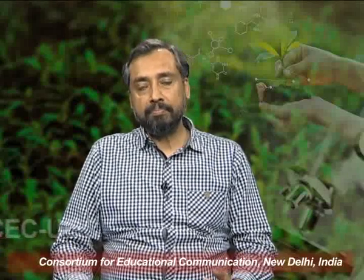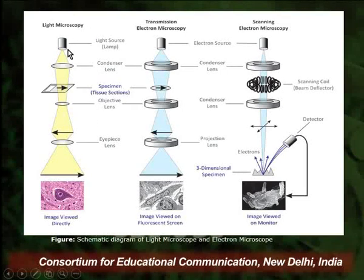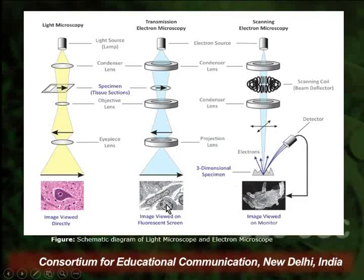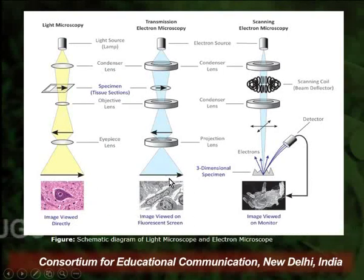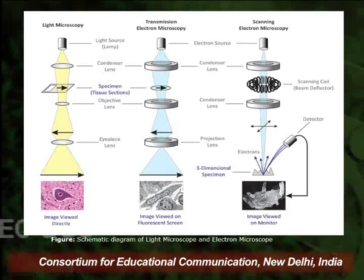That covers the five different components of an electron microscope. With the help of a diagram, we can compare various components of a light microscope, transmission electron microscope, and scanning electron microscope. The image generated by a light microscope can be viewed directly, whereas the image from transmission electron microscopy is viewed on a fluorescent screen, and in the case of scanning electron microscope, it is viewed on a monitor.